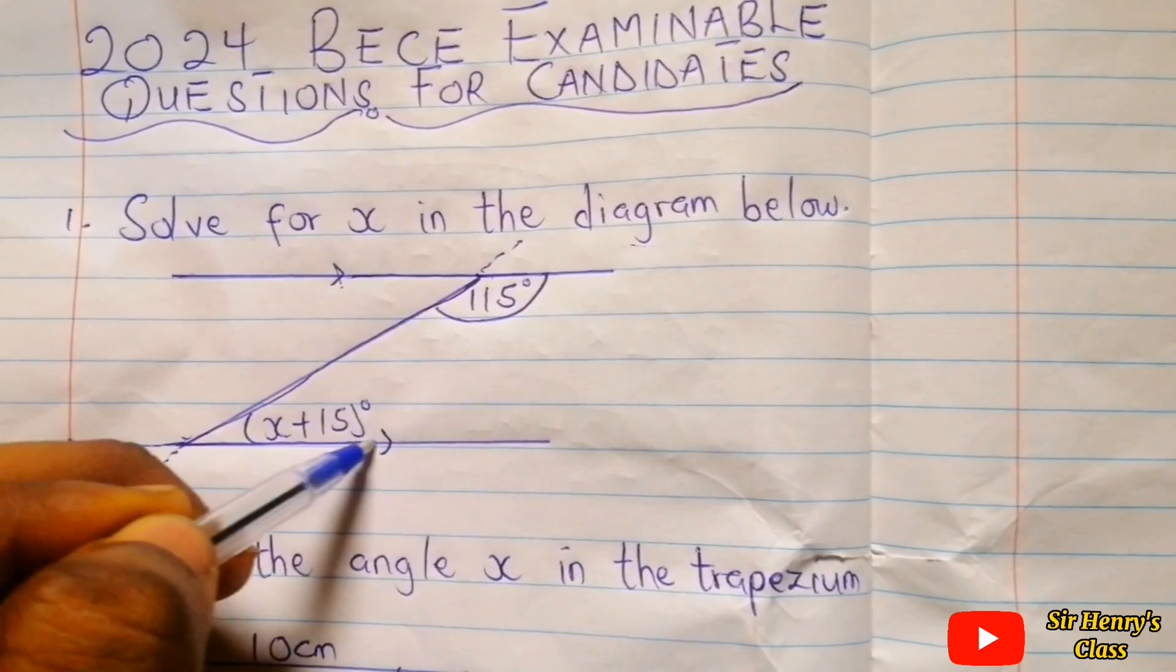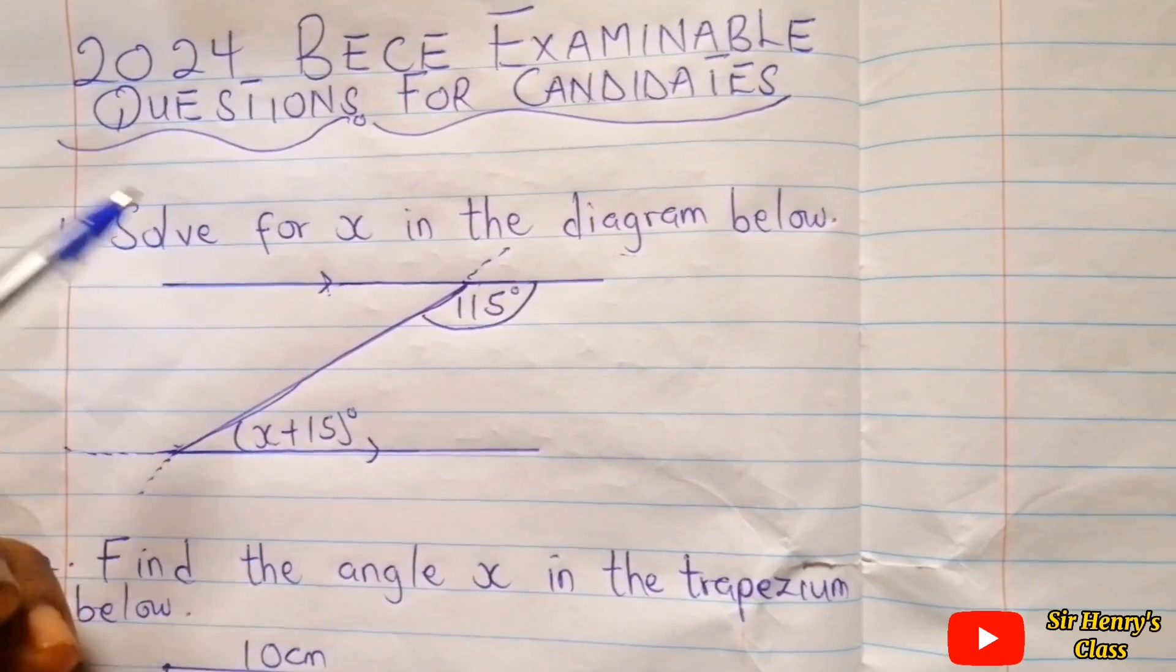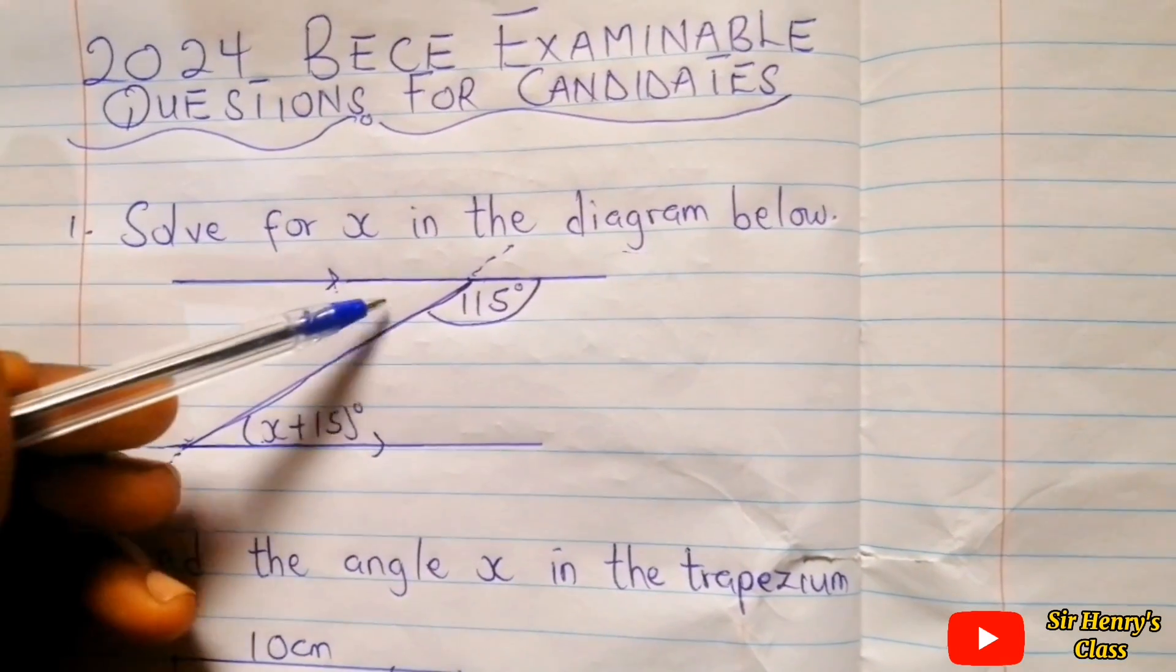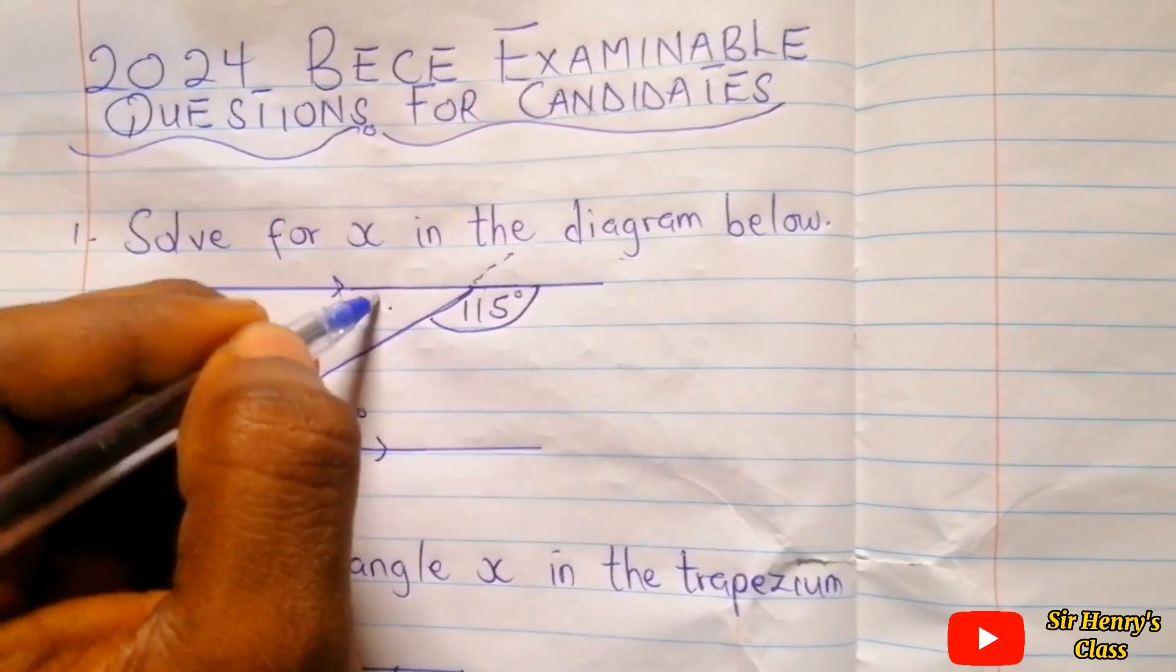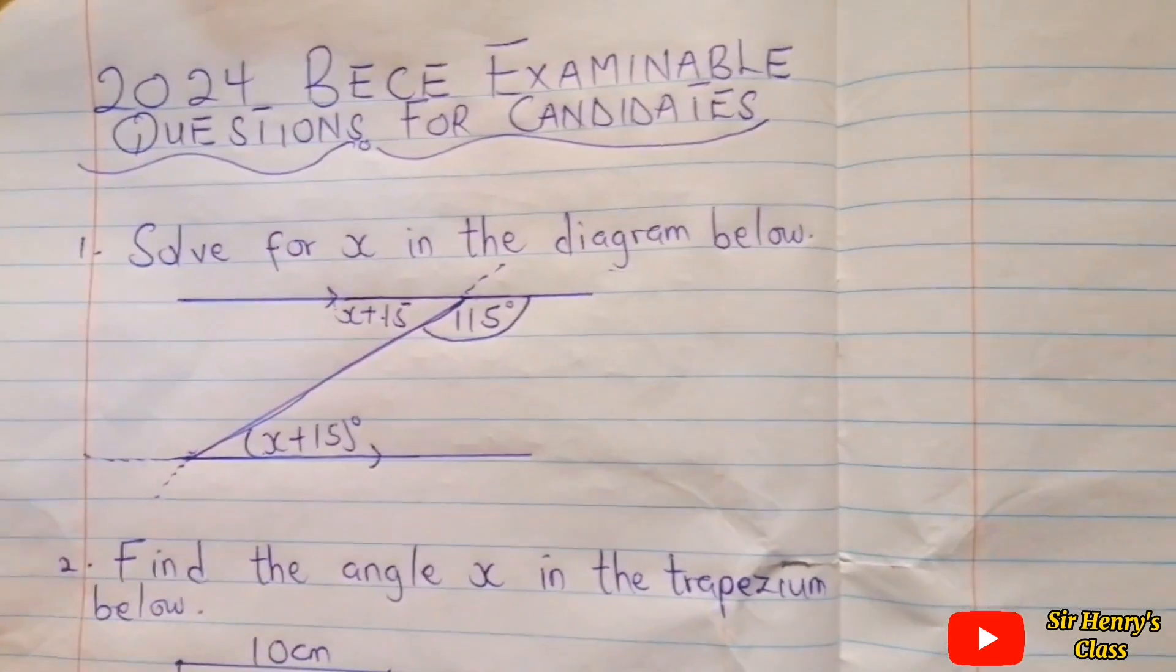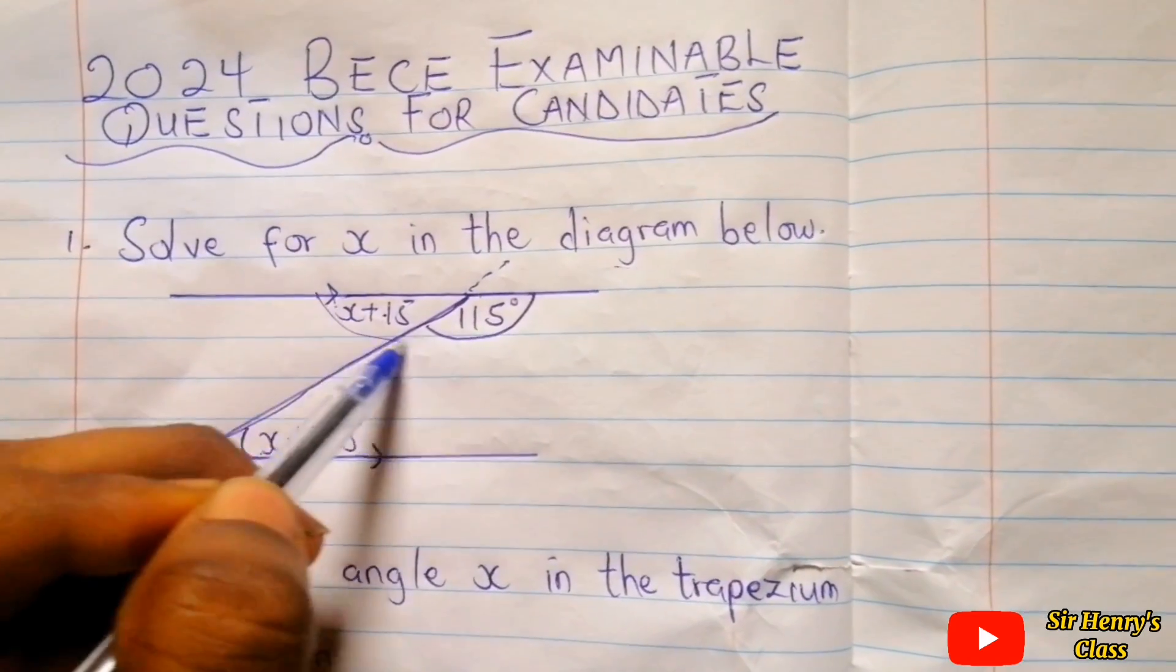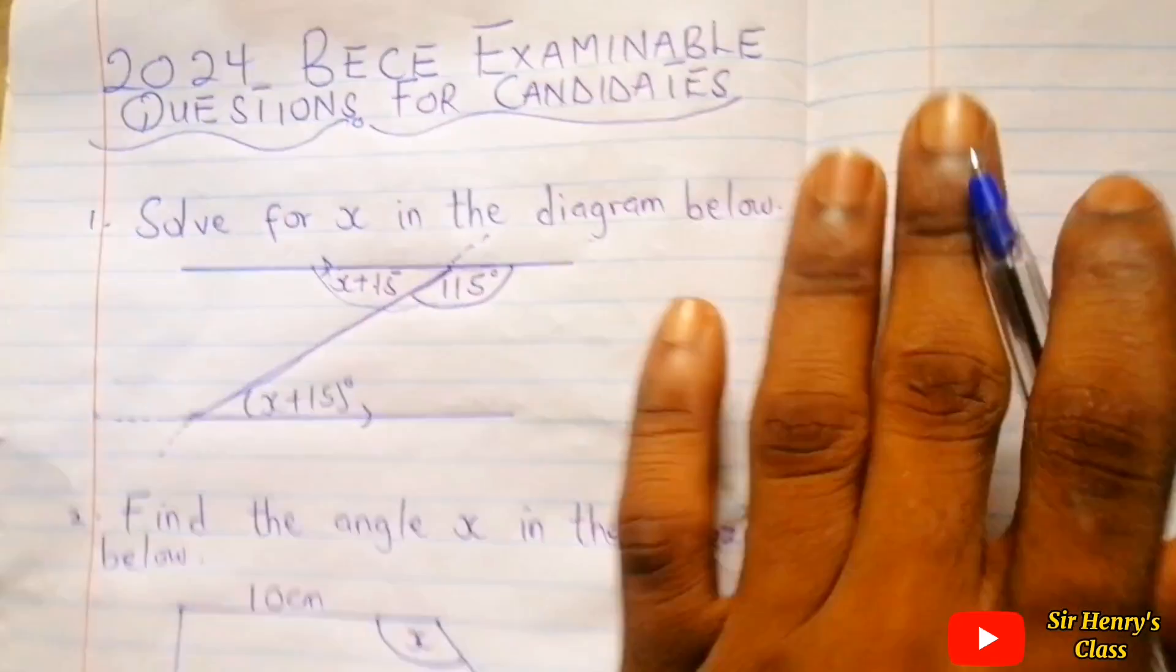Now using the angle properties of parallel lines, this Z shape, when we draw this Z shape, we are going to get two angles that will be equal. The angle here will be equal to the angle here. So this side counts will be x plus 15. Angles on a straight line add up to 180 degrees.